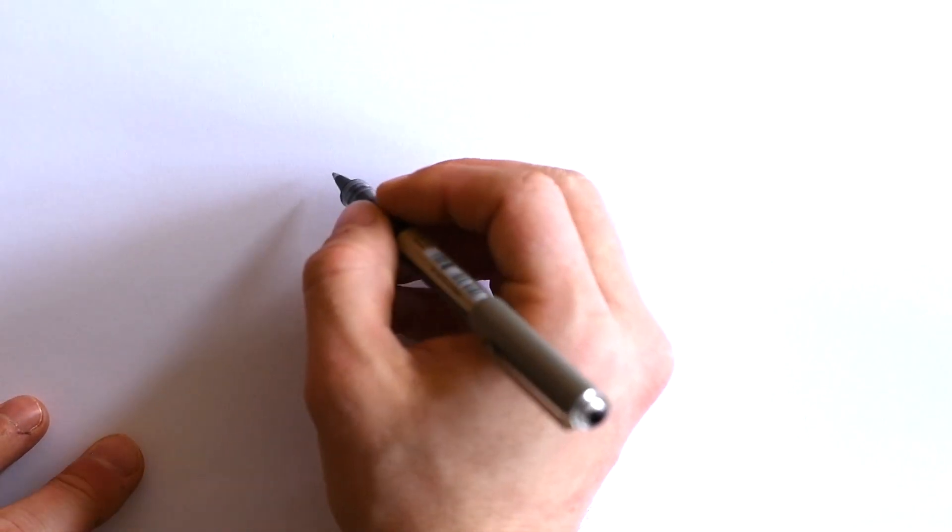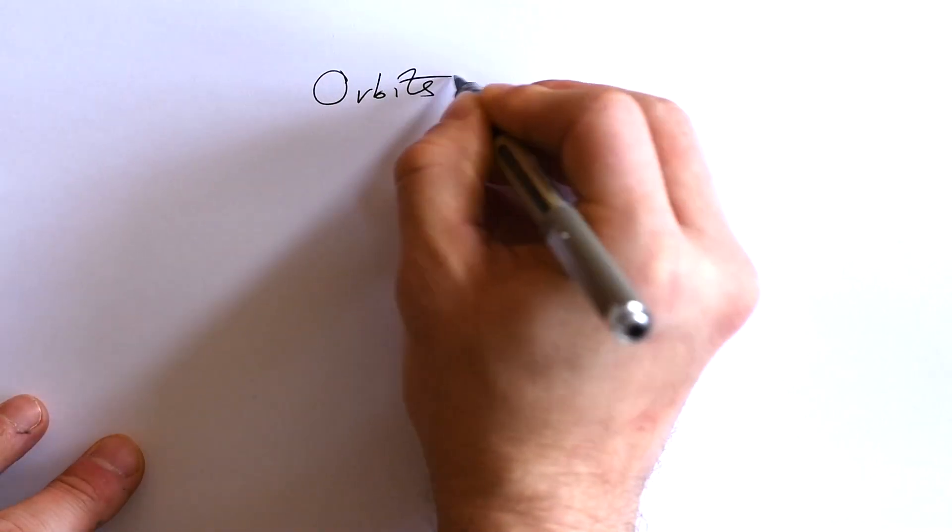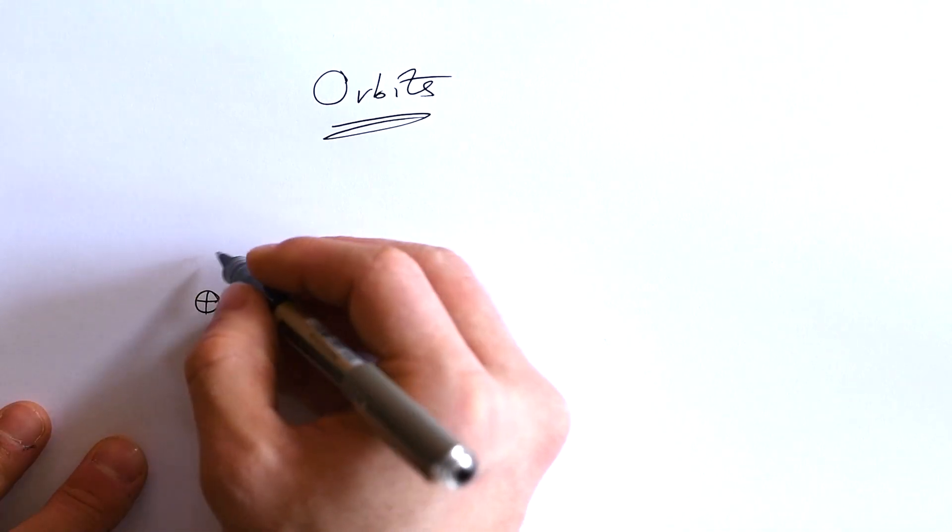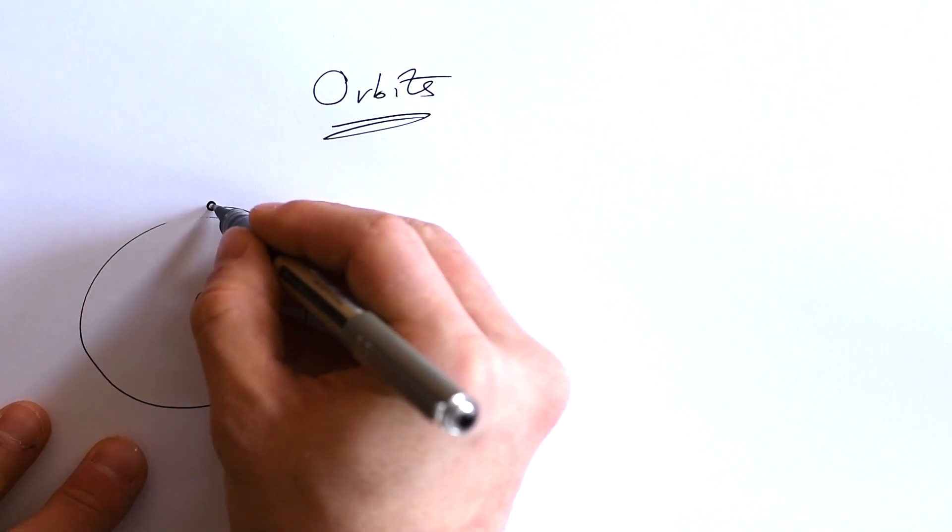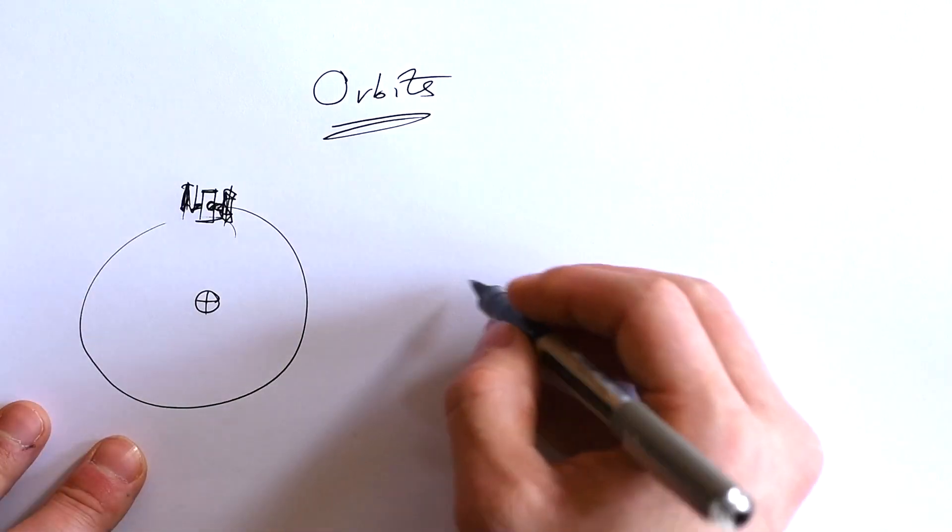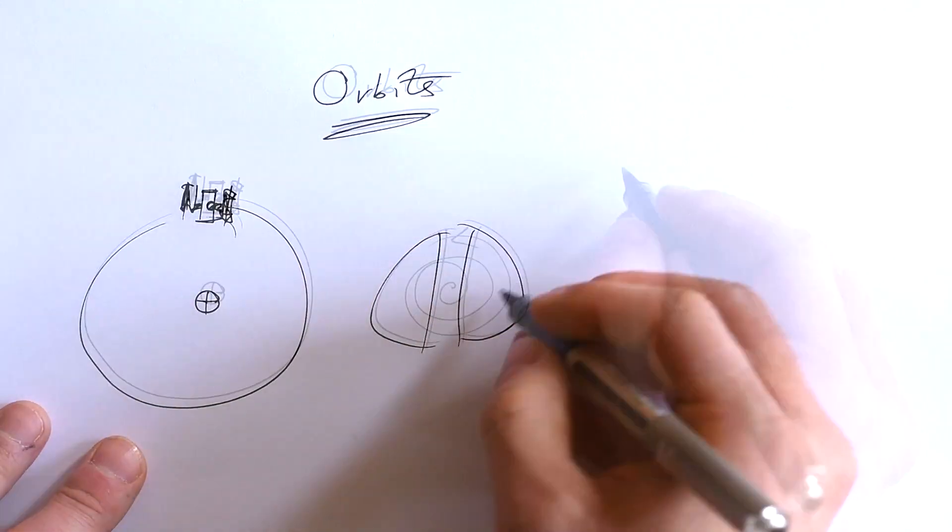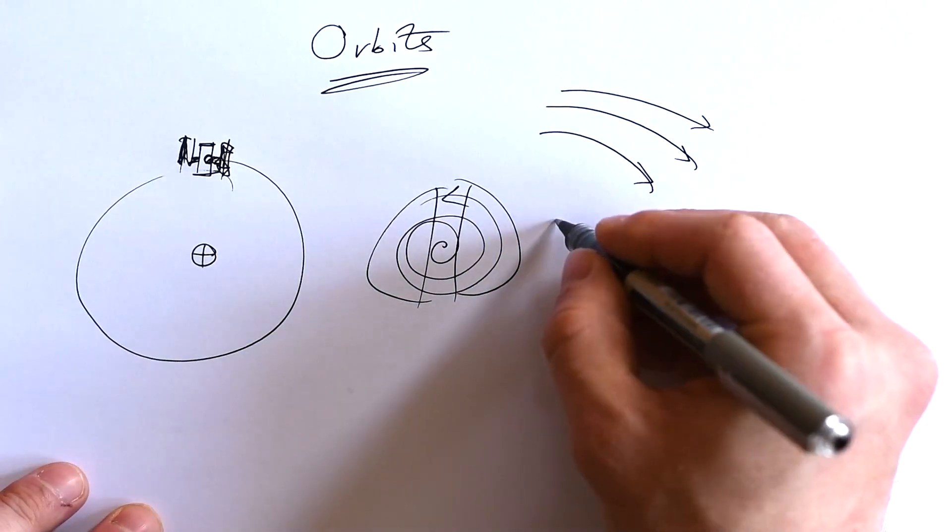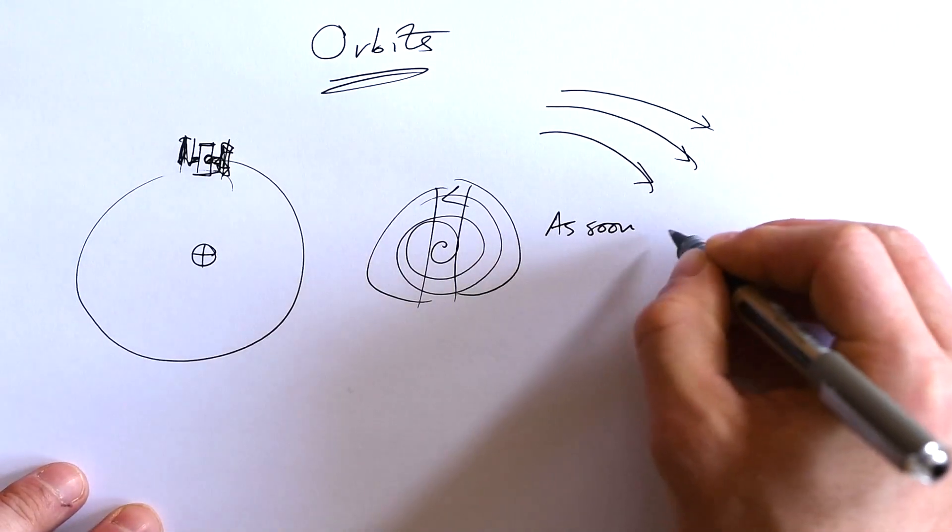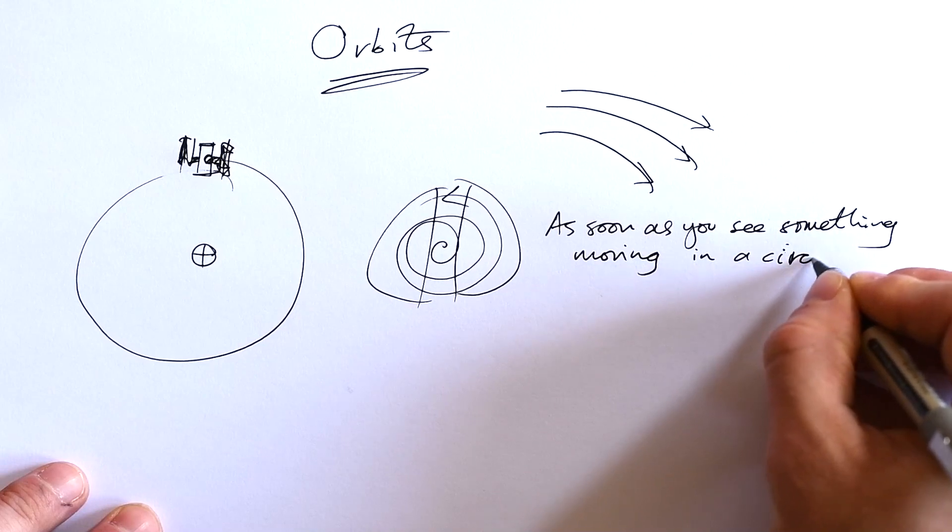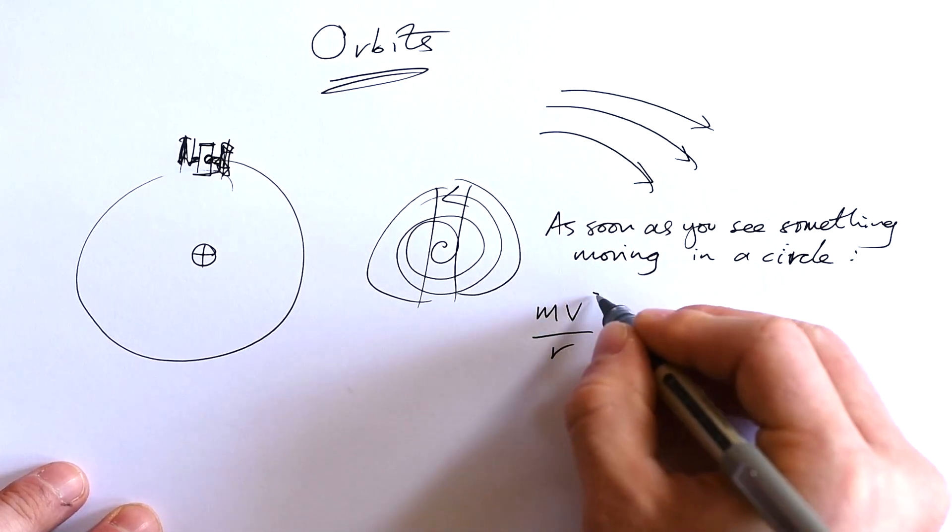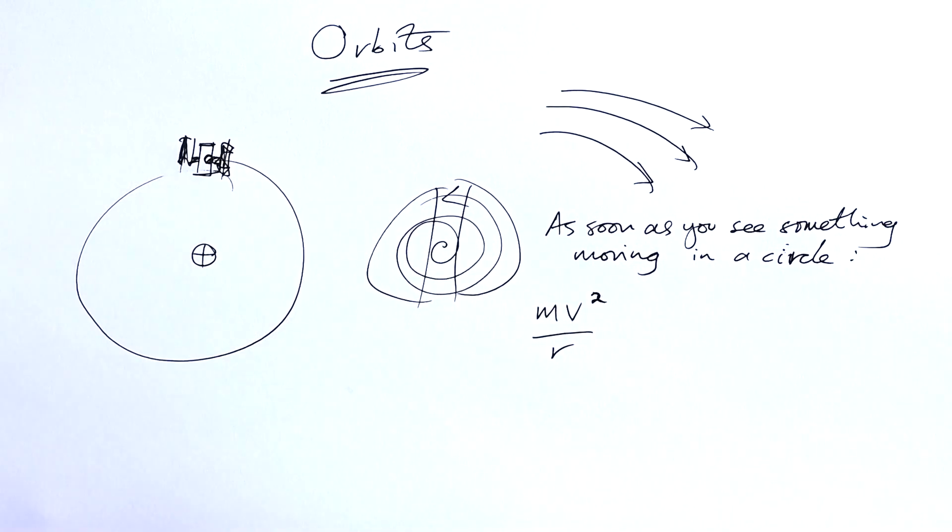Second year A-level physics is full of things orbiting, moving in circles, whether that be a planet or a satellite, or whether that be a cyclotron or a mass spectrometer or something else. The trick is to remember that as soon as you see something moving in a circle or undergoing circular motion, the first thing you do is crack out mv squared over r.